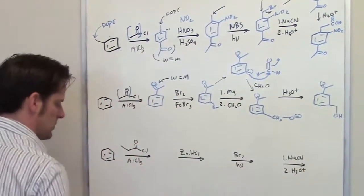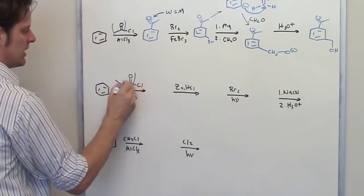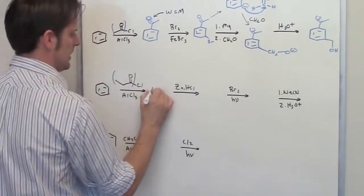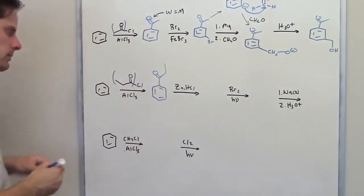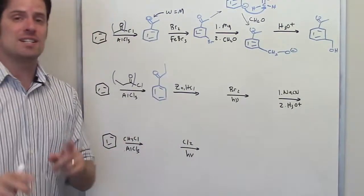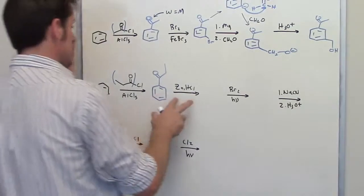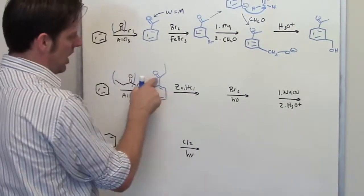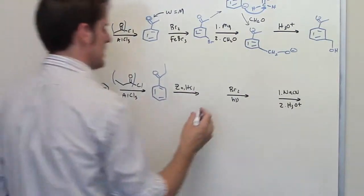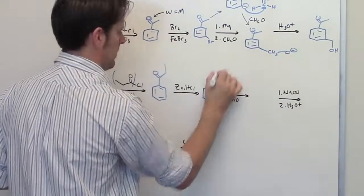Moving to the next sequence: I take benzene and treat it with Friedel-Crafts acylation conditions, placing an acyl group onto the ring to give the acylbenzene. Then I treat this molecule with zinc and HCl — those are Clemmensen reduction conditions, which shave off the carbon–oxygen double bond at the benzyl position and replace it with bonds to hydrogen, converting the carbonyl into a CH₂ group.